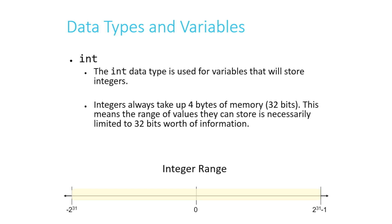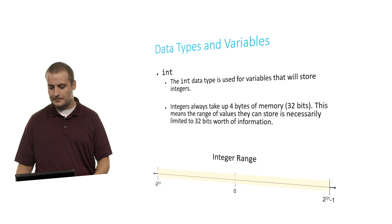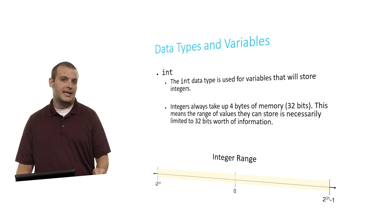It was long ago decided that we would split up that range of 32 bits into negative integers and positive integers, each getting half of the range. So the range of values we can represent with an integer goes from negative 2 to the 31st power to 2 to the 31st power minus 1, because we also need a spot for 0. Basically this is about negative 2 billion to about positive 2 billion, give or take a couple hundred million.